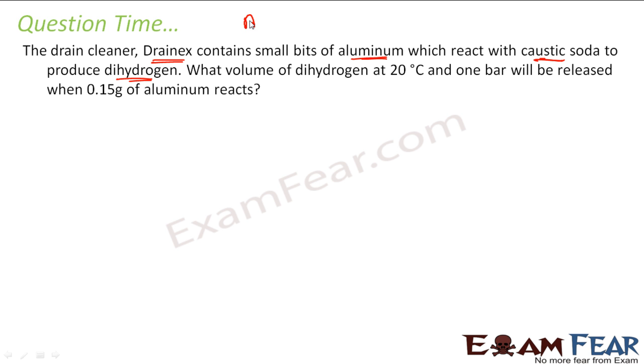Let's take the reaction first. Aluminum plus caustic soda plus water in the drain gives NaAlO2 plus some dihydrogen. To balance the reaction, you will get something like this. I won't spend time in balancing this. If you have issues in balancing equations, watch my video, class 10 videos where we explain chemical equation equilibrium and we have taught how to balance chemical equations.